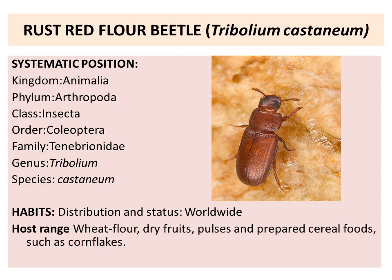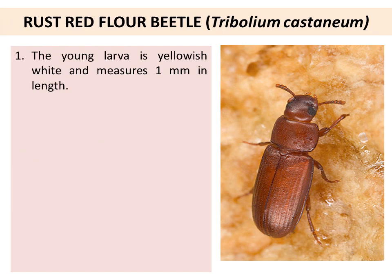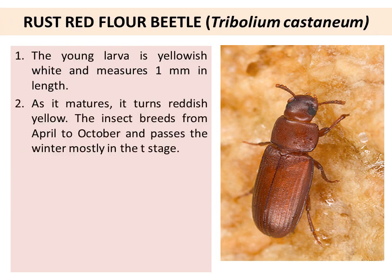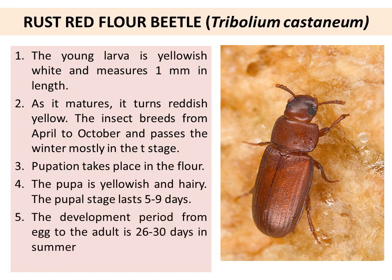Distribution and status: worldwide. Host range includes wheat flour, dry fruits, pulses, and prepared cereal products such as cornflakes. The young larva is yellowish-white and measures 1 mm in length; as it matures, it turns reddish-yellow. The insect breeds from April to October and passes the winter mostly in this stage. Pupation takes place in the flour. The pupa is yellowish and hairy. The pupal stage lasts 5 to 9 days, and the developmental period from egg to adult is 26 to 30 days.